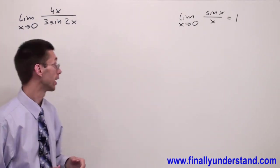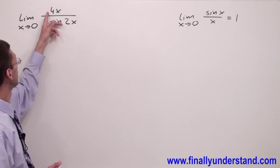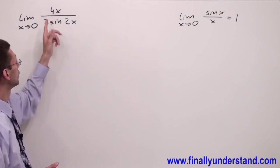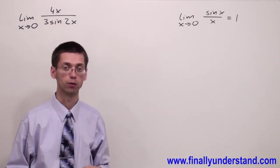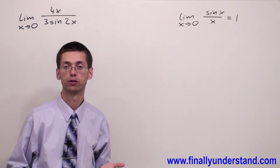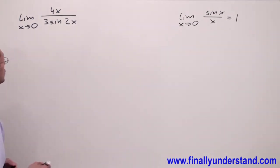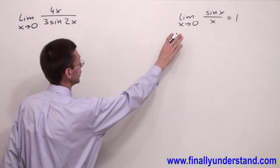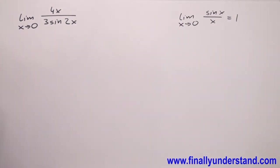If x approaches 0, my numerator is also going to be equal to 0, because 4 times 0 is equal to 0. So what we're supposed to do — we're going to use this fundamental theorem.